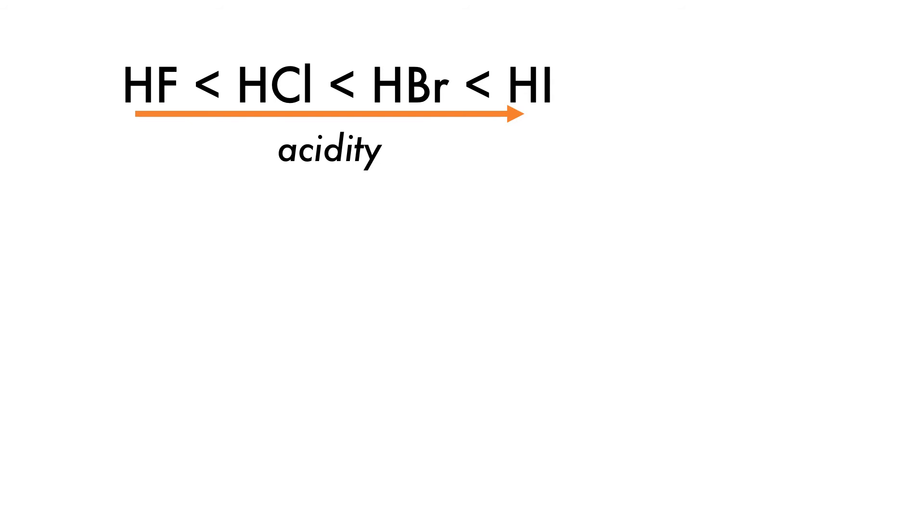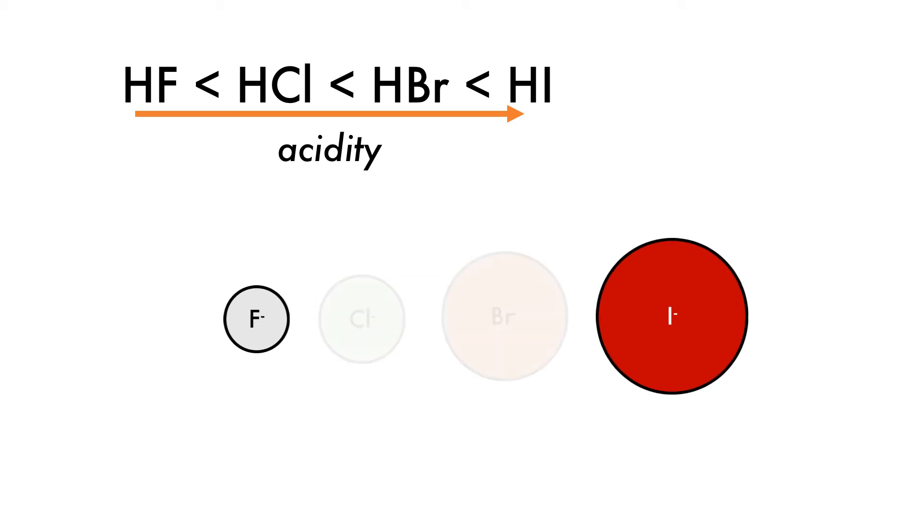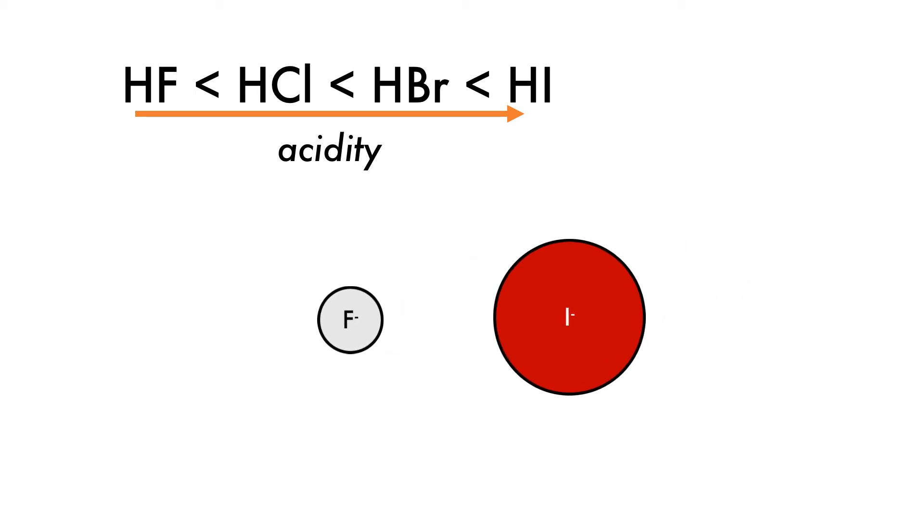Why is this trend present for halogenic acids? Generally, the larger the conjugate base, the more stable it will be. For the halogenic acids, the strength of the acid increases as the size of the anion increases. If we take iodide, for example, its large size means that the negative charge is diffuse and dispersed over a large volume, stabilizing it. The fluoride, conversely, is small and has a high charge density, making it unstable.